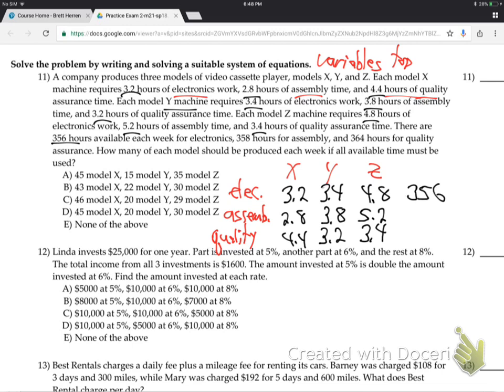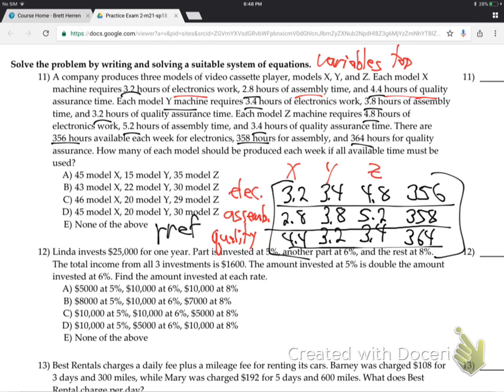And then it says 356 hours for electronics. That goes over here because that's the electronics. And 358 for assembly. That's the assembly. And 364 for the quality. Make that a big old matrix like that and do the RREF thing. And you'll get the answer, D.